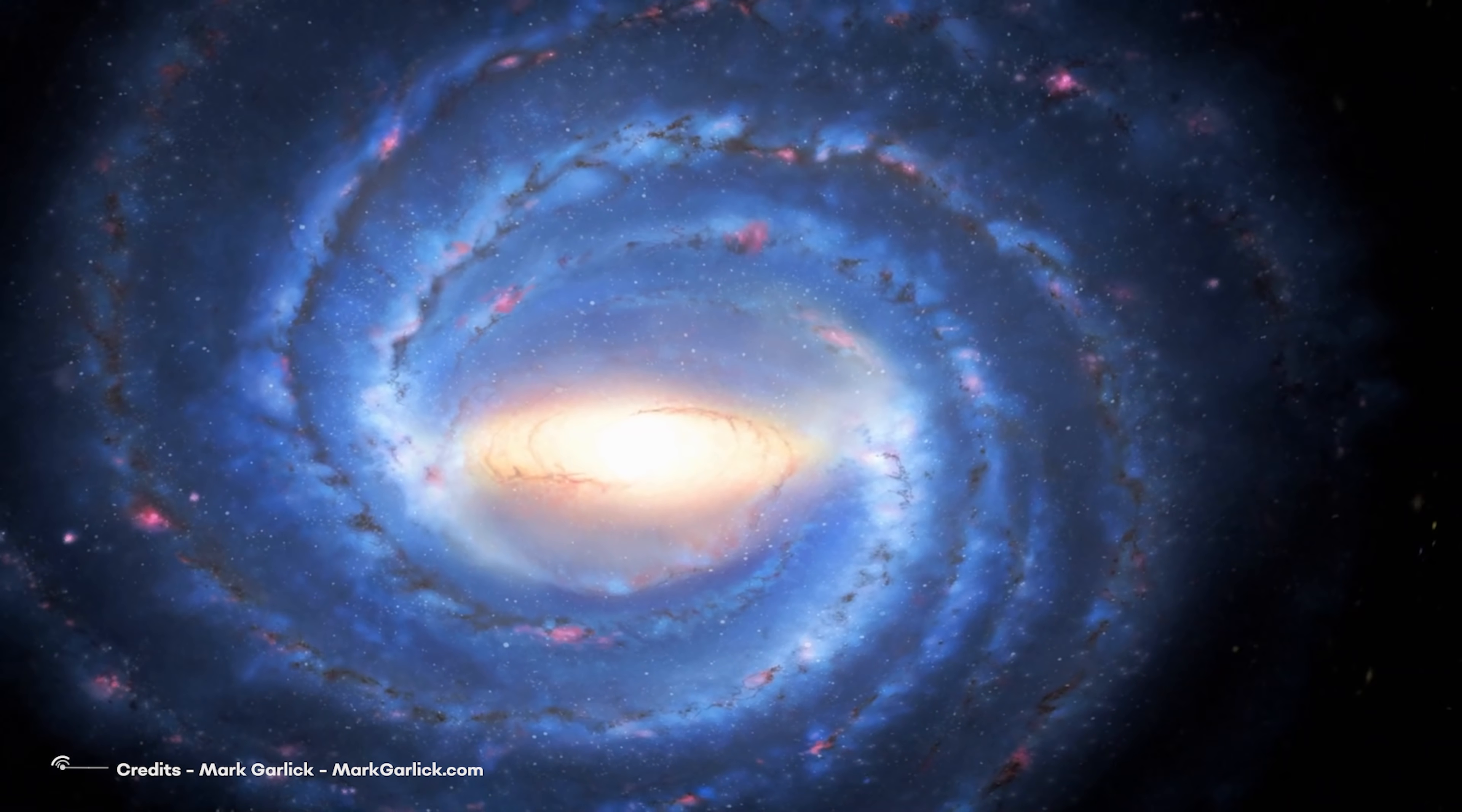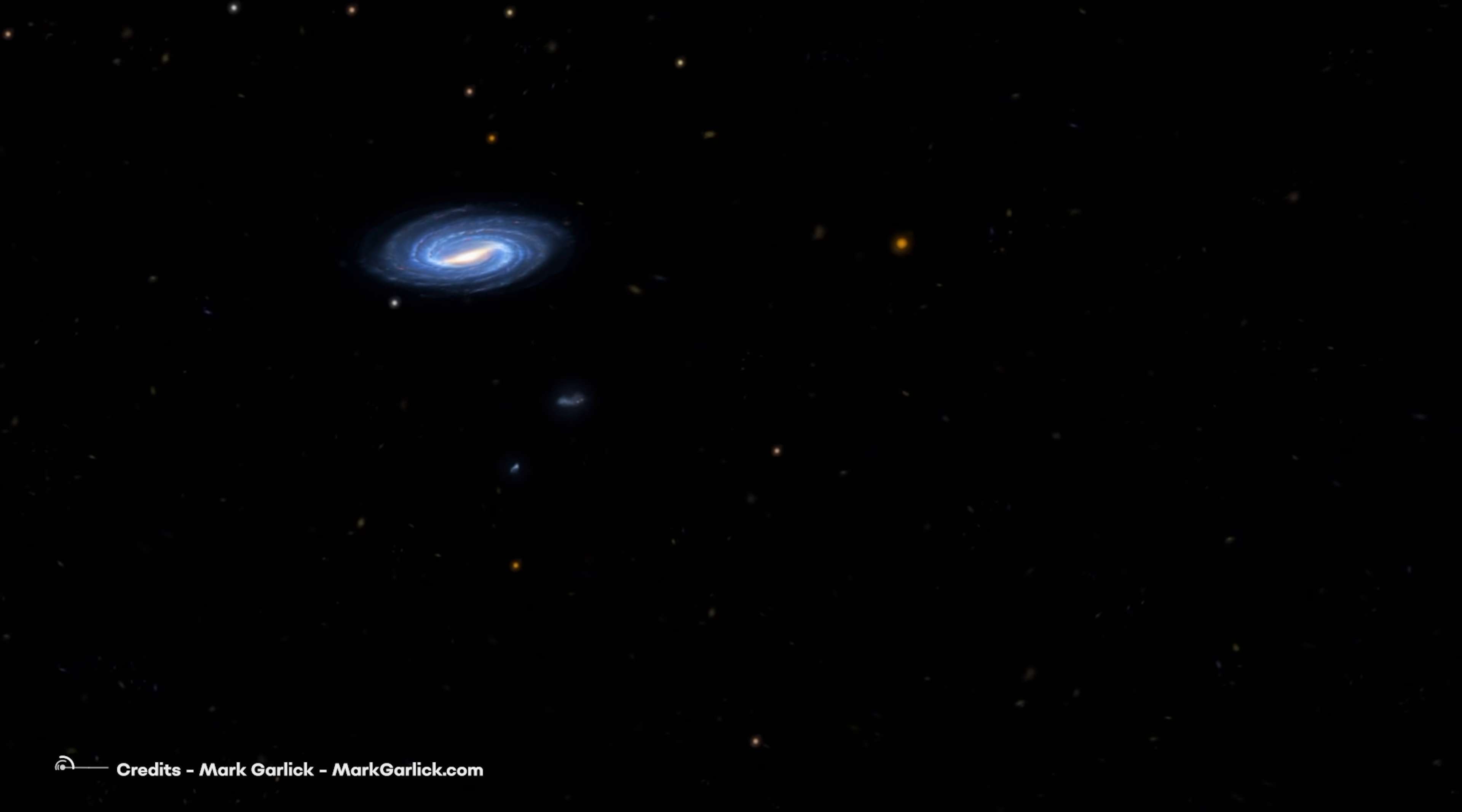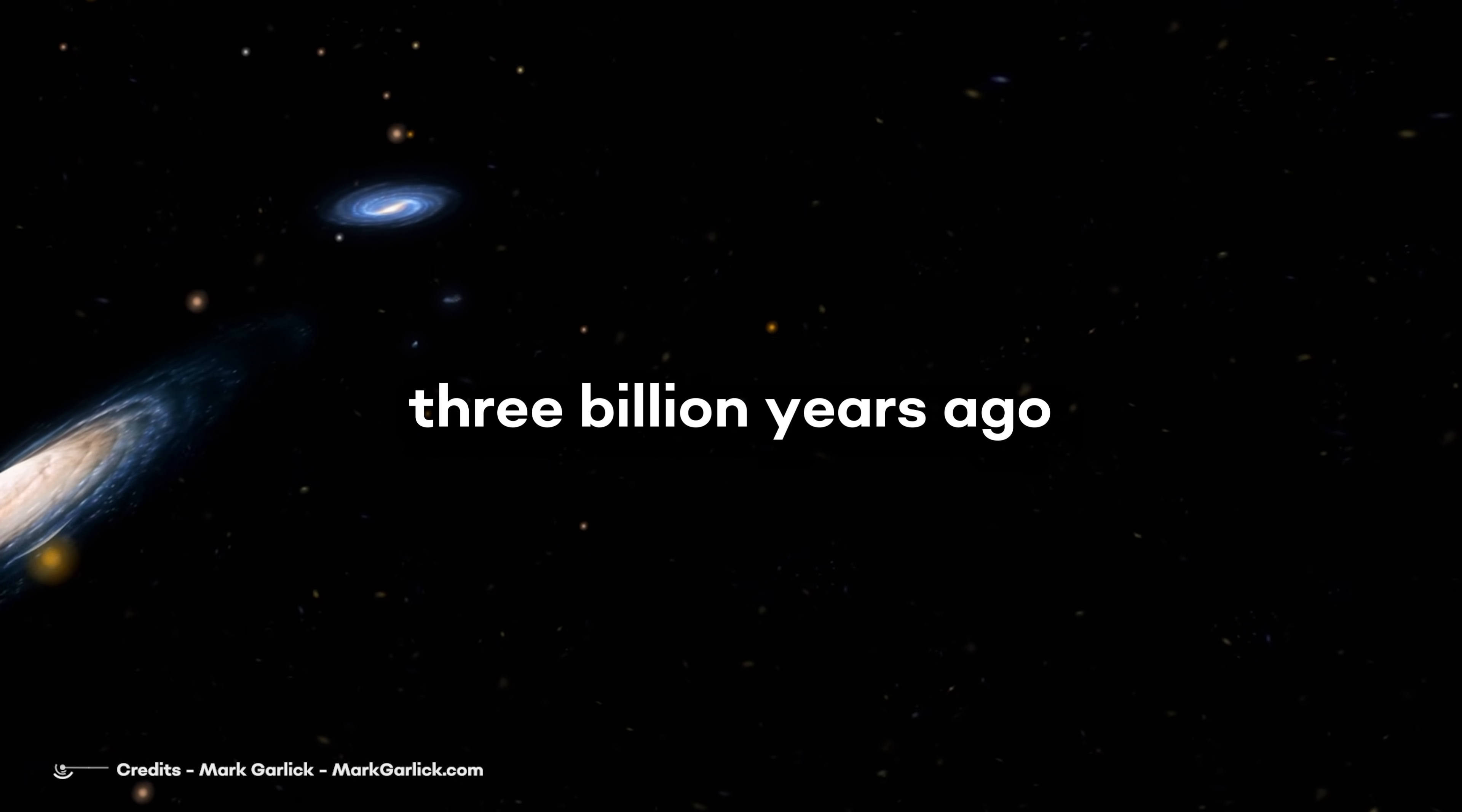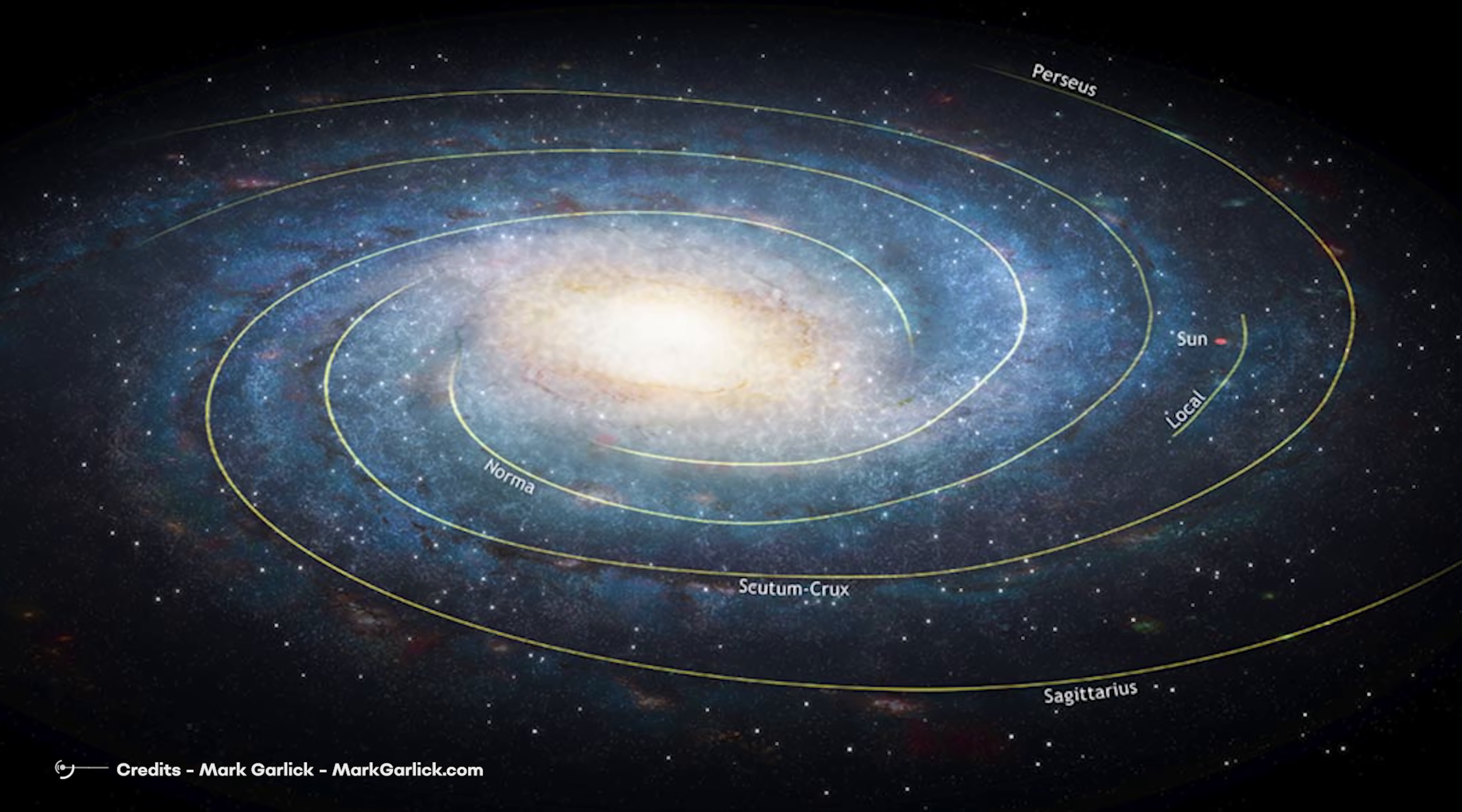Astronomers noticed a warp in the disc of the Milky Way, and they now think it was the result of a recent interaction with another galaxy. Recent means that roughly 3 billion years ago, a satellite galaxy came close enough to our own to create a ripple effect still visible in the Milky Way stars today.